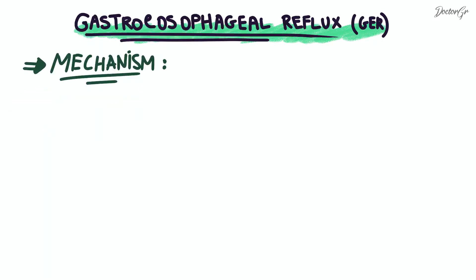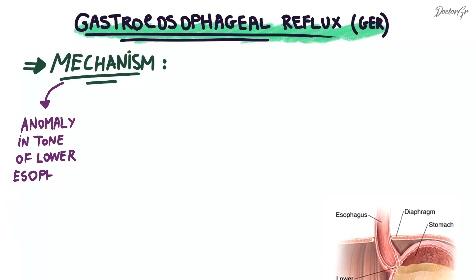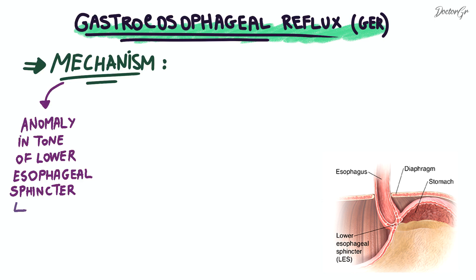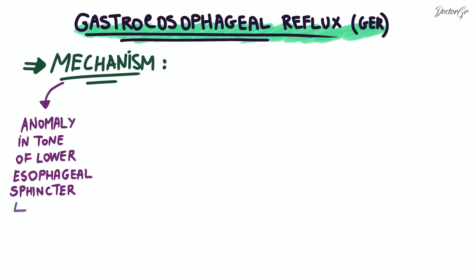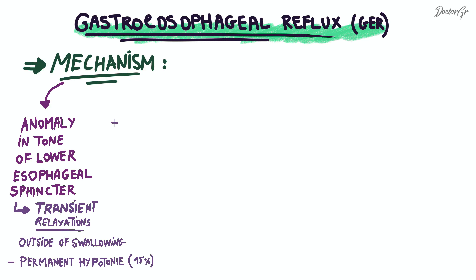The physiopathological mechanism of GER involves several elements. Firstly, an anomaly in the tone of the lower esophageal sphincter, a structure situated just above the junction of the esophagus and the stomach, that relaxes and opens when you swallow something. This can manifest as a transient relaxation outside of swallowing, or permanent hypotonia, meaning it loses its ability to effectively retain gastric content in the stomach.